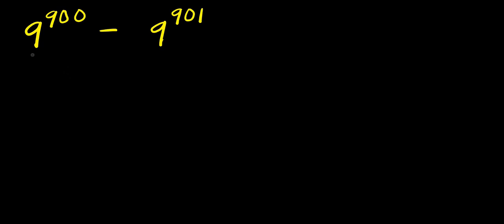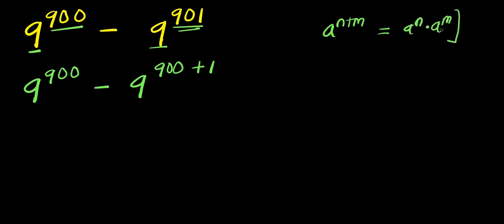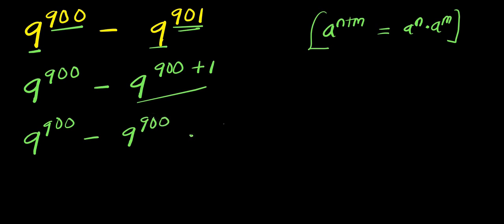Let's evaluate 9 to the power of 900 minus 9 to the power of 901. I have 9 to the power of 900 minus 9 to the power of 901, where 901 equals 900 plus 1. So I apply the identity a^(n+m) = a^n times a^m, giving me 9 to the power of 900 minus 9 to the power of 900 times 9 to the power of 1.